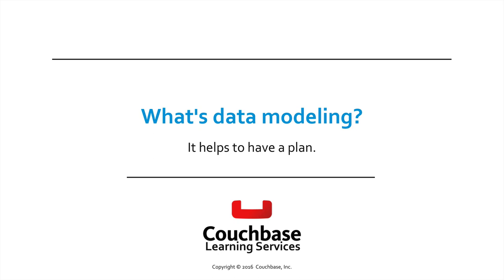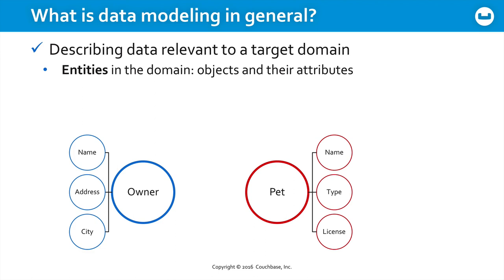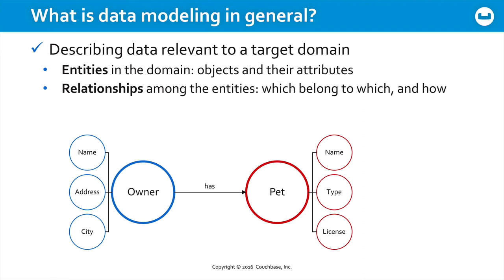Data modeling in general is the process of describing the data relevant to a particular target domain. What is it that you're trying to build software for? What are the requirements and, critically, who's involved? Think of the entities in the domain. What are the objects and their attributes? Perhaps you have an owner of a pet, and each owner will have certain attributes describing them, and each pet would have other attributes describing them. And then how are they related? Does the owner have a pet? Perhaps a pet has an owner. Which entity belongs to which, and how do they belong to each other?